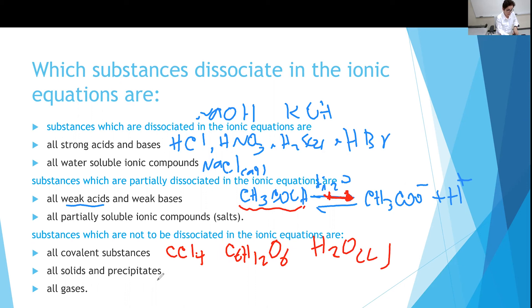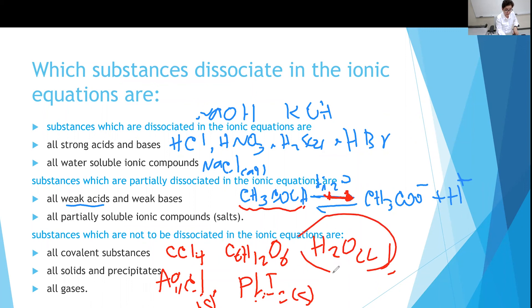Compounds that do not dissociate include all covalent substances — for example, carbon tetrachloride, glucose (C6H12O6), and liquid water (H2O) do not dissociate when writing ionic equations. All solids and precipitates, such as silver chloride or lead iodide, stay in solid form. All gas molecules stay in molecular form — for example, CO2 product stays as CO2 gas. So if you have a solid, liquid, or gas, you do not break it down into ions; you keep it in molecular form.